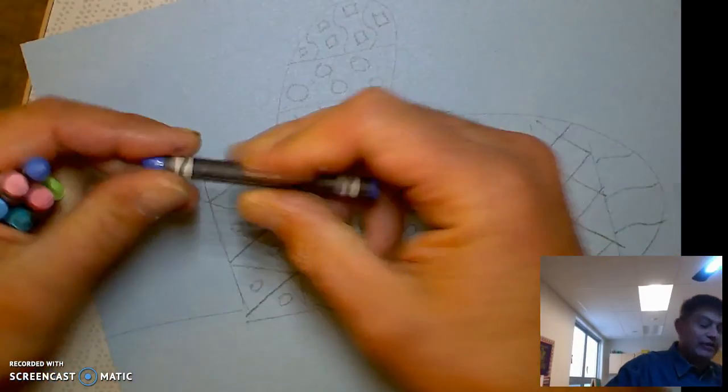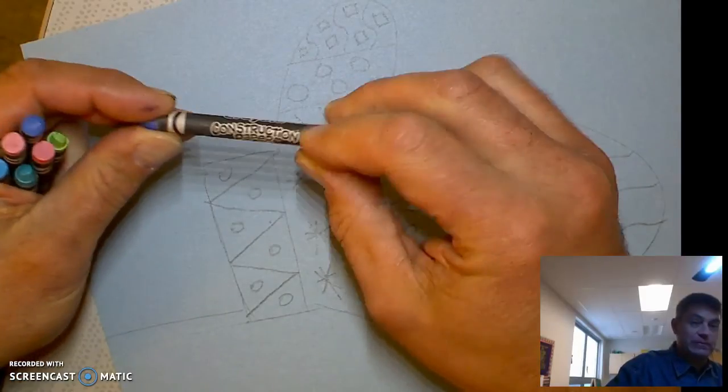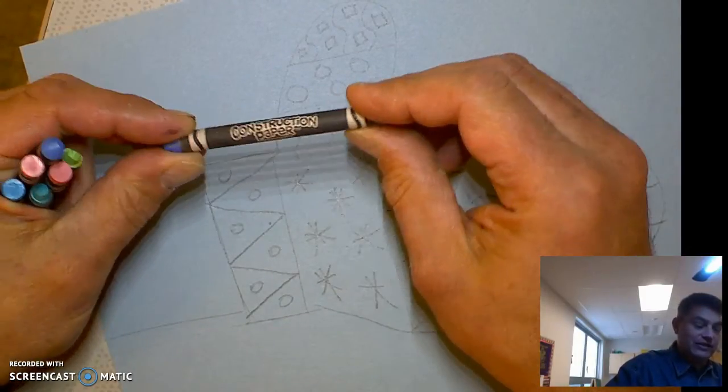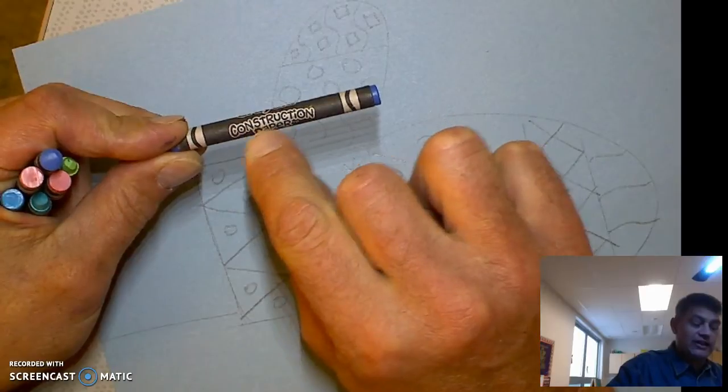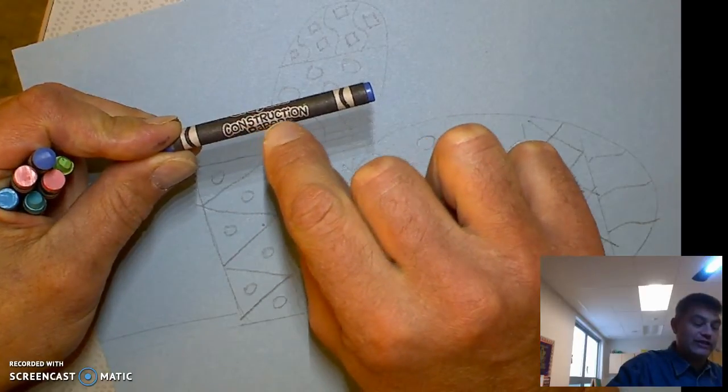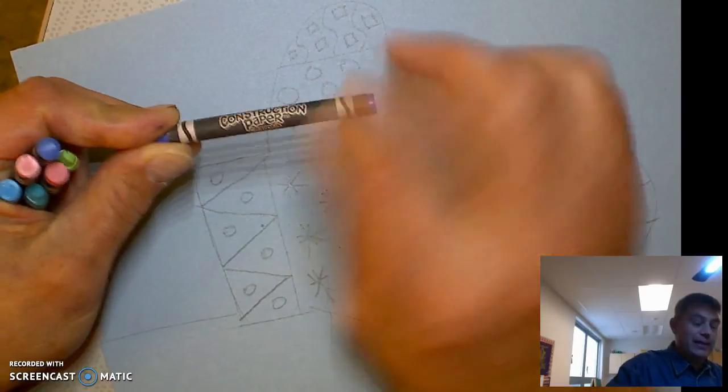So next section, you've got to use these construction paper pastel crayons. So it says construction, C-O-N-S-T-R-U-C-T-I-O-N paper.